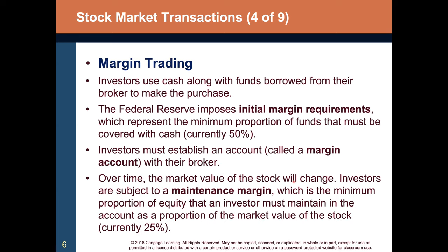Over time, the market value of the stock will change. Investors are subject to a maintenance margin — the minimum proportion of equity that must be maintained as a proportion of the market value of the stock. For example, if you borrowed $500 to buy $1,000 of stock and the position drops to $750, you still owe $500, leaving only $250 of equity — 25% of the original. If it drops further, there would be a margin call requiring you to add more money to the account.